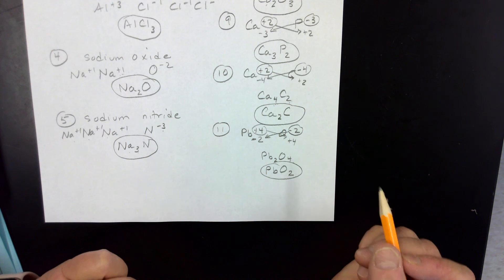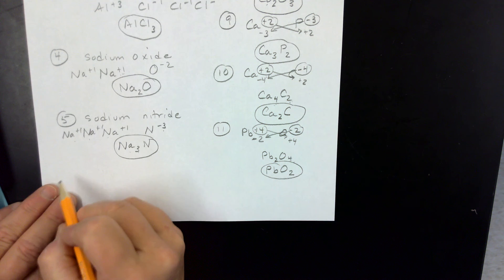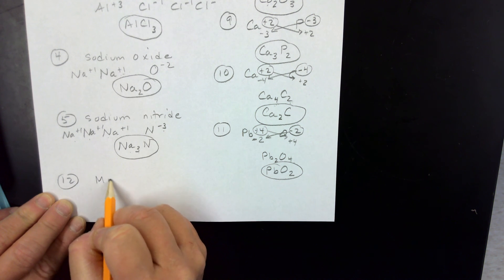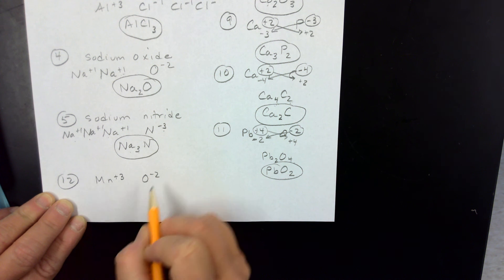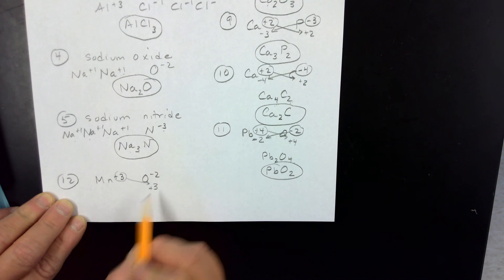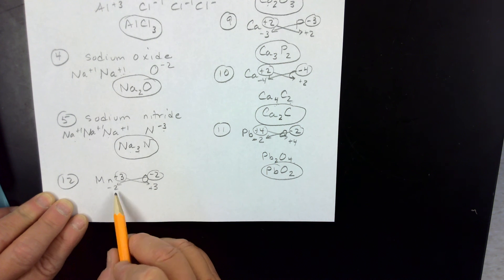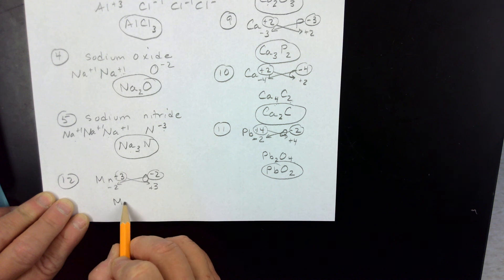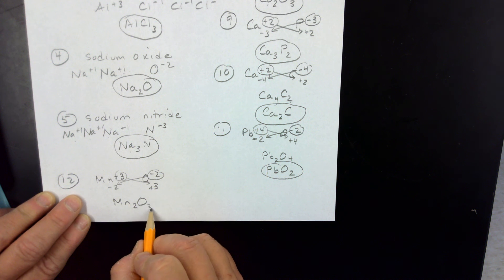Two more examples. Problem twelve: Mn plus three and O minus two. Drop and swap gives a plus three and a minus two. Two to three is already fully reduced, so dropping the charges gives Mn₂O₃.